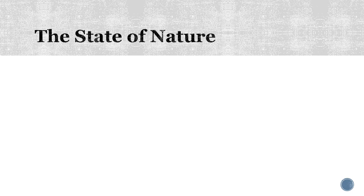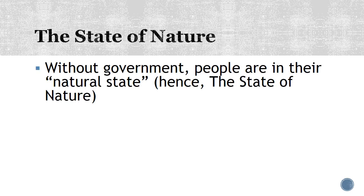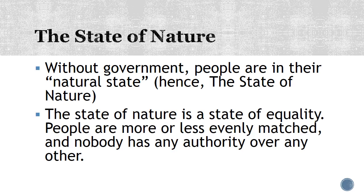Step one is to imagine life without any sort of government or moral rules. This is what we call the state of nature — what Hobbes referred to as people in their natural state. Without government, people are in their natural state. Hobbes points out that the state of nature is a state of equality, meaning that people are more or less evenly matched. Some people are stronger than others, but nobody is so much stronger than anybody else that they can just get whatever they want without any fear.